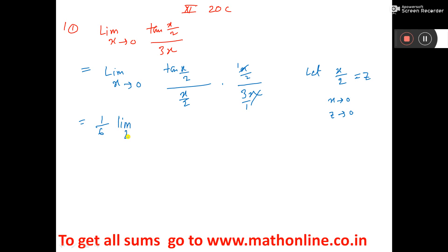So here I am writing z tends to 0, tan x by 2 is z and x by 2 is z. Now there is one formula: limit z tends to 0, tan z by z equal to 1. So 1 by 6 into 1.